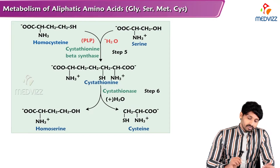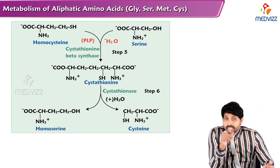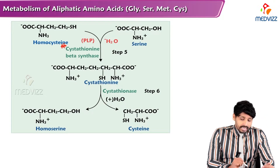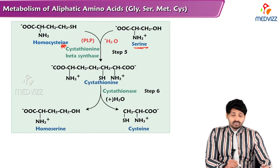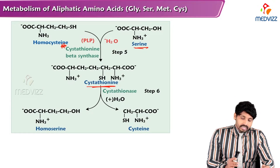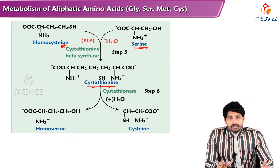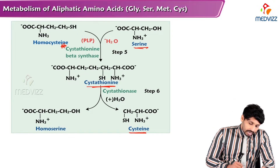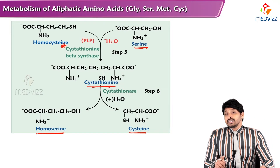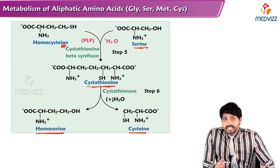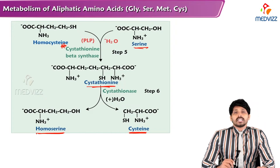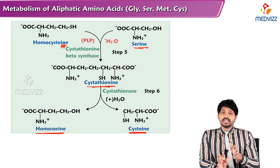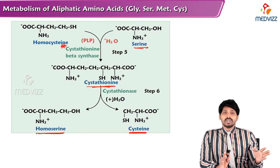When homocysteine is formed, the enzyme Cystathionine beta-synthase — a very important enzyme — catalyzes its reaction with serine to form Cystathionine. Cystathionine is then cleaved by adding a water molecule with the help of the Cystathionase enzyme to form Cysteine and homoserine. Serine is also involved in the making of Cysteine. This is how Cysteine is produced from Methionine — that is why Cysteine is non-essential whereas Methionine is essential.